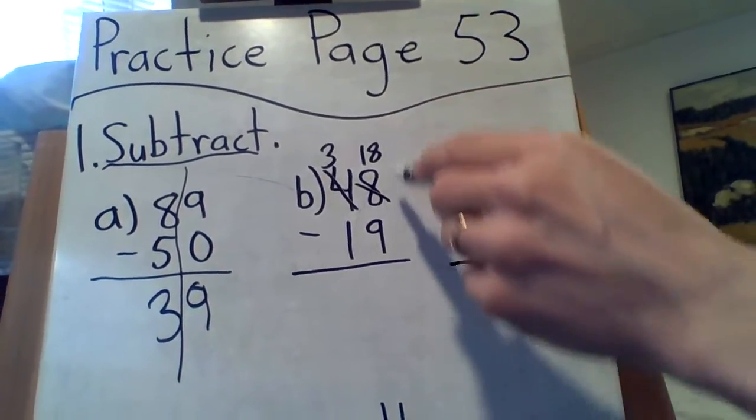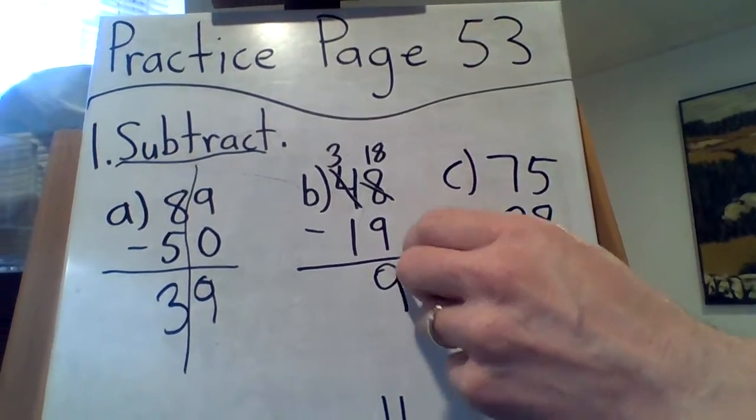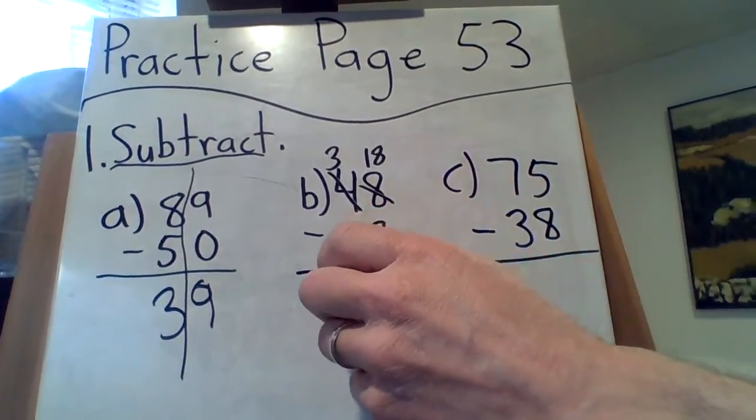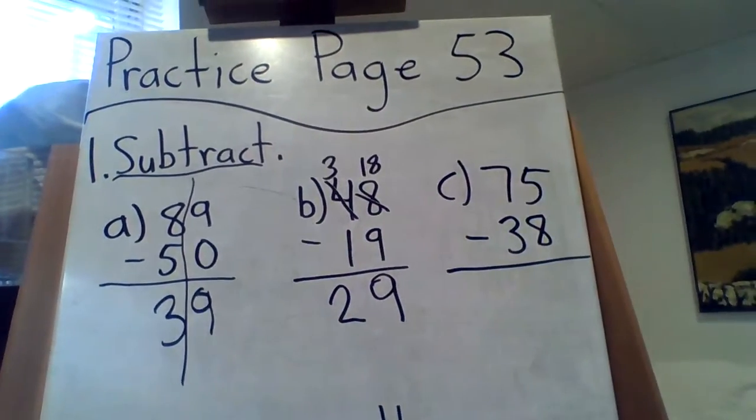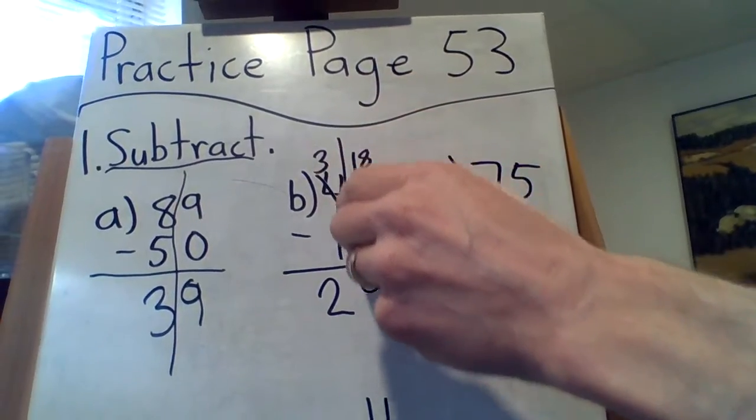Ooh, 18 take away 9. Doubles. Doubles. So that must be 9. Doubles in reverse, because 9 plus 9 is 18. And 3 take away 1 is 2. There we go. 29. And you can separate that, too, if you want.